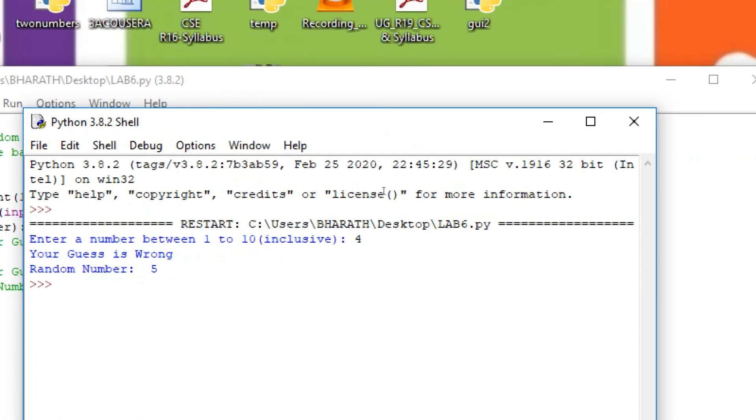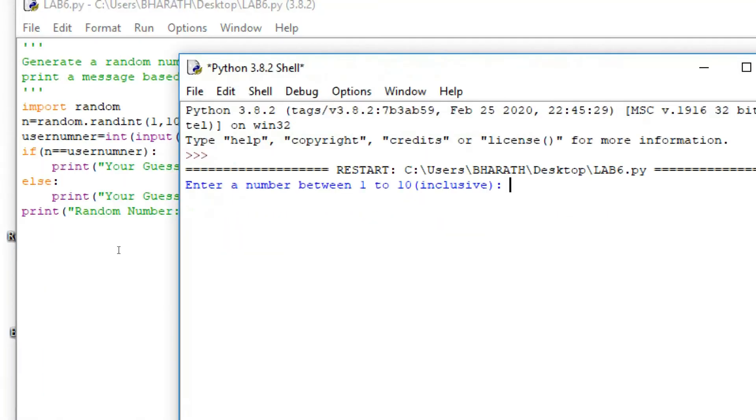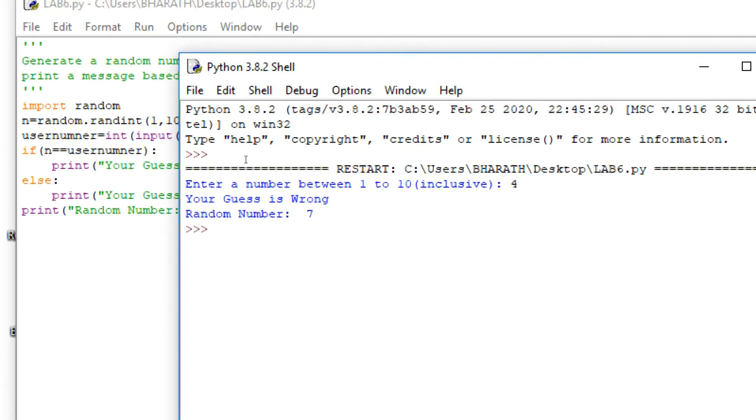You can execute another time. Again, I enter 4. Your guess is wrong. Actually, the random number is 7. If both the numbers are the same, then it prints your guess is right.